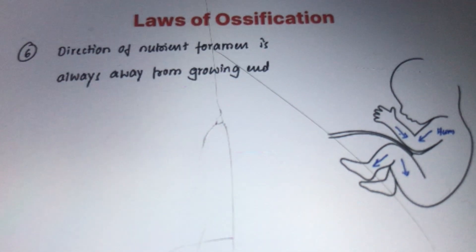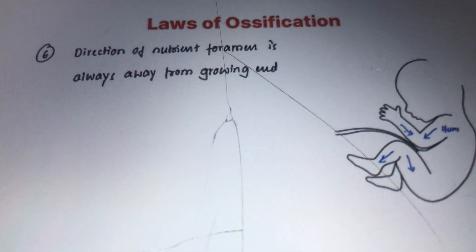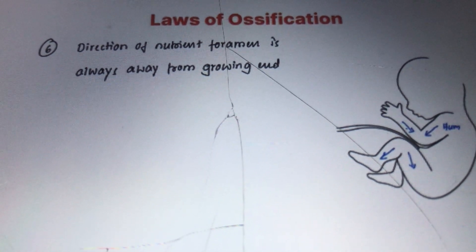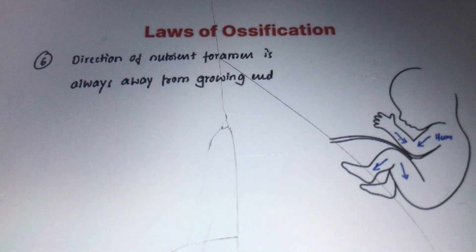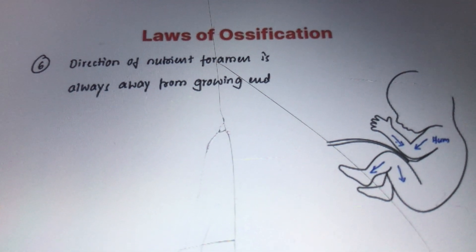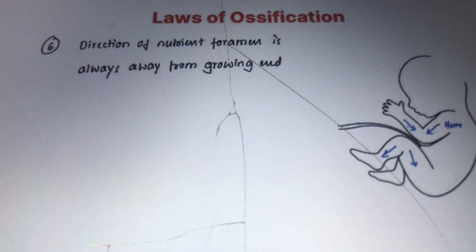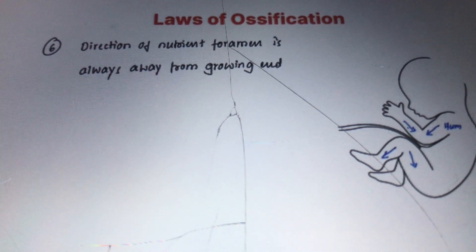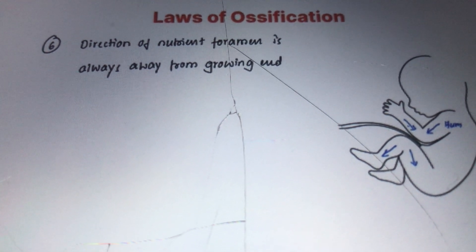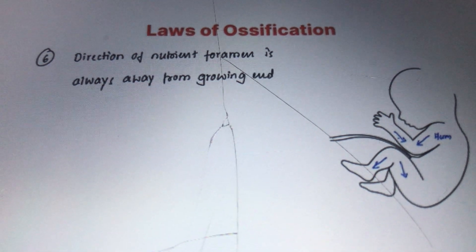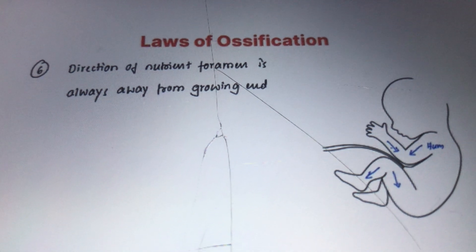For the femur, the nutrient foramen is directed away from the knee joint toward the upper end, suggesting the lower end of femur is the growing end. For the tibia and fibula, the foramen is directed toward the lower end, suggesting the upper end is the growing end.